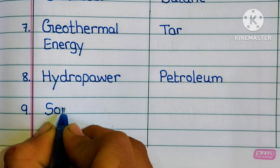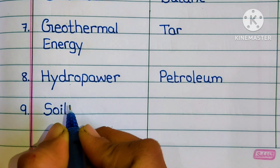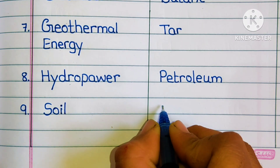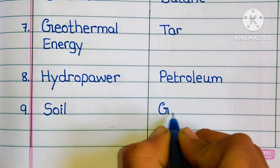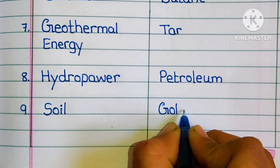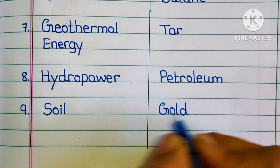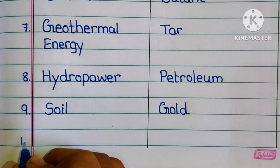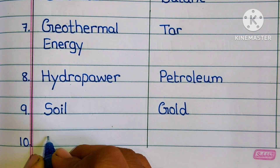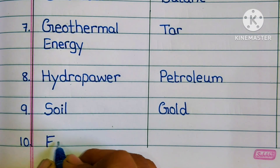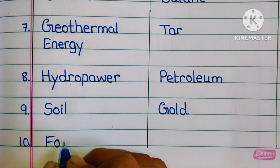Ninth one: soil is a renewable resource. Non-renewable resources are oil and gold.